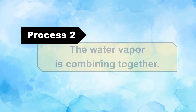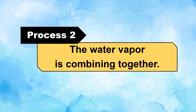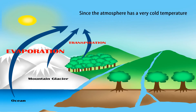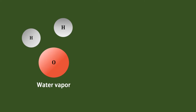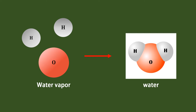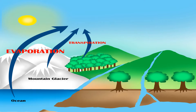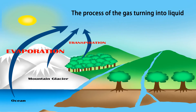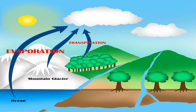Process 2: The water vapor is combining together. Since the atmosphere has a very cold temperature, the particles of water vapor combine together and become tiny droplets of water. This process of gas turning into liquid is condensation. As a result, clouds are formed.